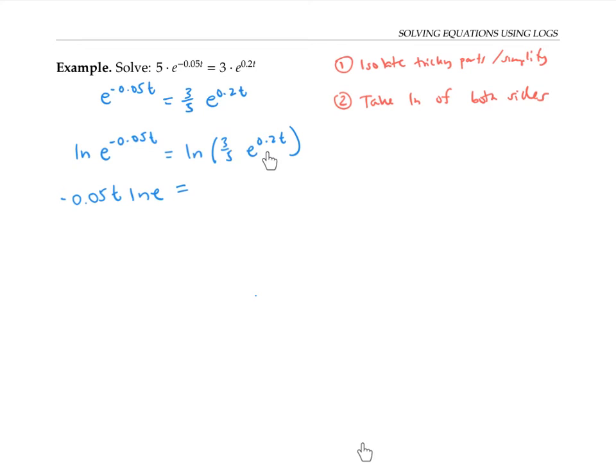So I can rewrite this as ln(3/5) + ln(e^(0.2t)). And now I can bring down the exponent. So that third step was using log rules to ultimately bring down my exponents.